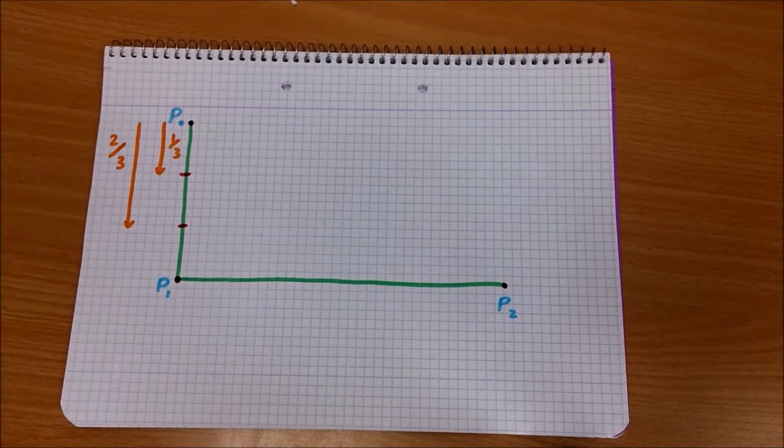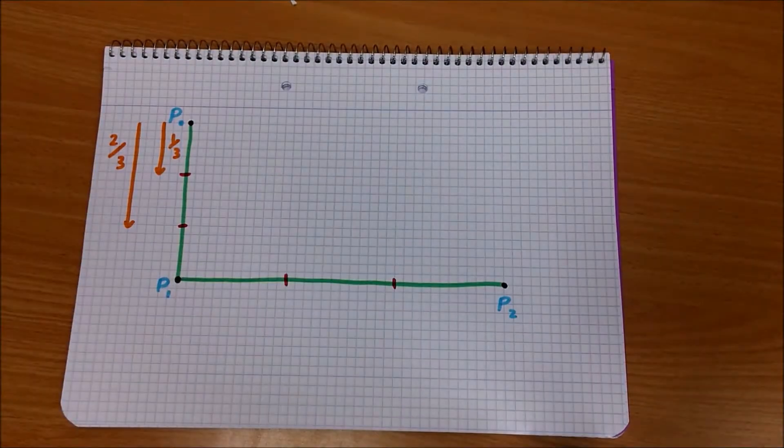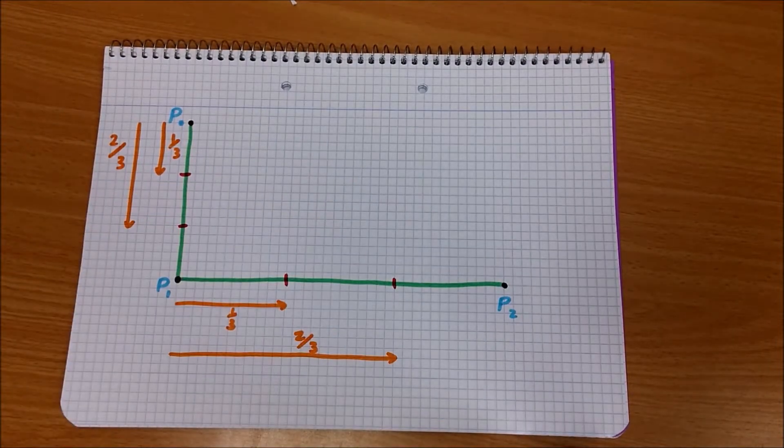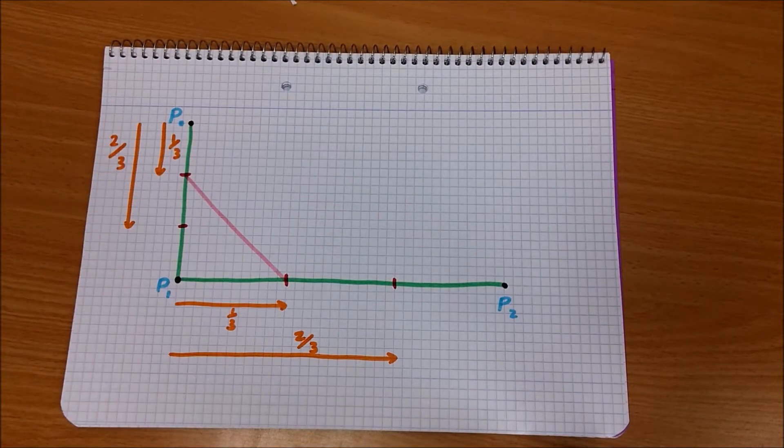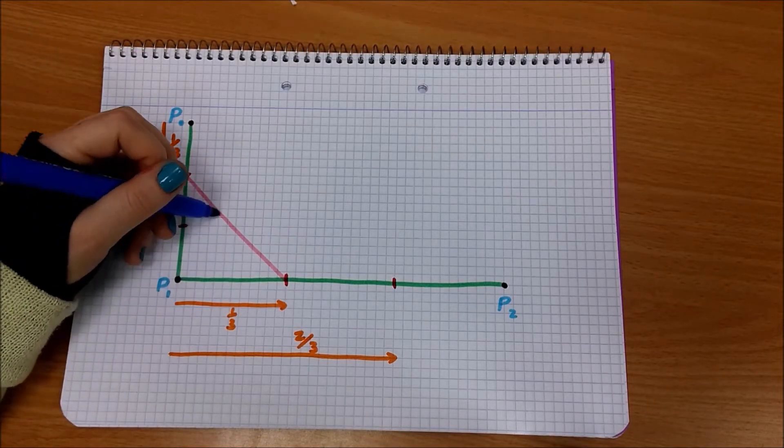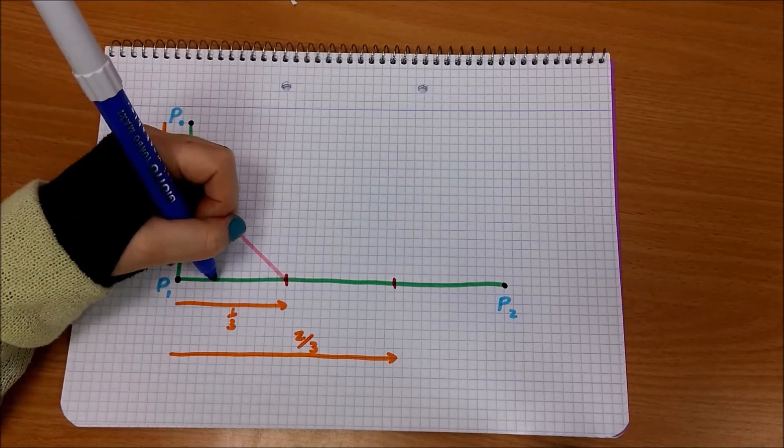To get the point where T equals 1/3, we connect the points on the Linear curves when T equals 1/3. And select the point on the new line segment where T equals 1/3. This is the point on the curve.